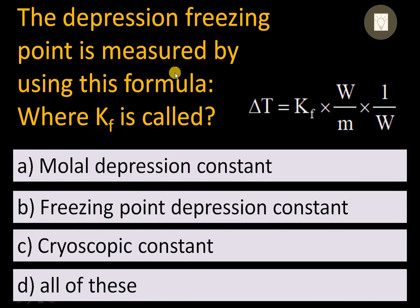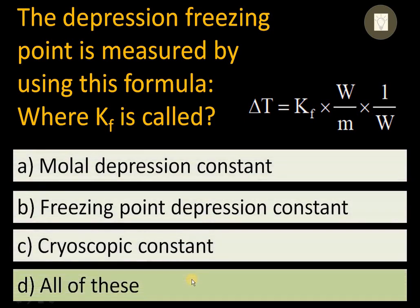The depression of freezing point is measured by the formula ΔTf = Kf × m, where Kf is called molar depression constant, freezing point depression constant, or cryoscopic constant. The cryoscopic constant is a well-known term. Therefore, D — all of these — is the correct answer.